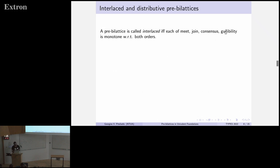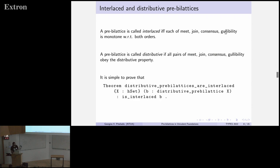Now, two basic properties of pre-bi-lattices are interlacing. A pre-bi-lattice is interlaced if all four operators are monotone with respect to both orders. The other property is distributivity. If all four operators, pairs of operators, obey the distributive property. The first easy property that we have is that the second implies the first. It can be proved easily in Unimath.